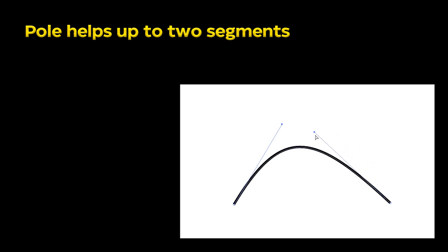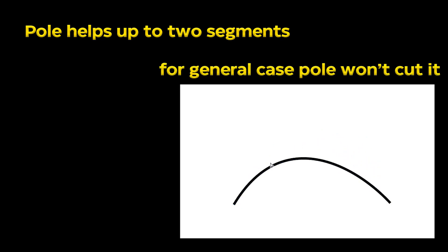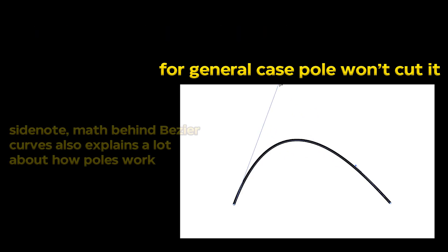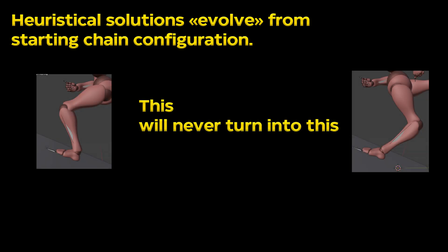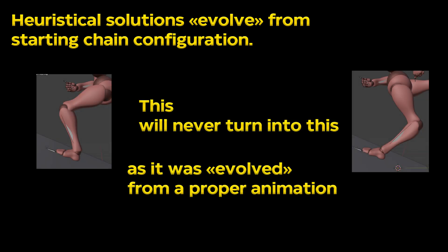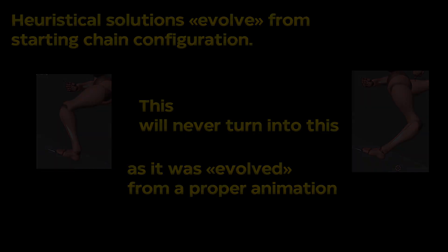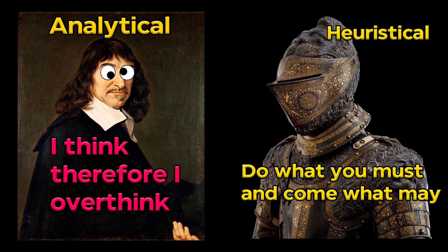A pole can be useful to properly place a chain of two segments, but as poles limit chain positions only to a single plane, as soon as we add more elements into the chain, we have several-solutions ambiguity even inside one plane. In this context, dependence on a previous chain configuration becomes a blessing because we can just modify from the original animated pose as the source. We will never get an instant knee flip if we calculate our leg positions with a heuristic algorithm using a correctly placed leg.